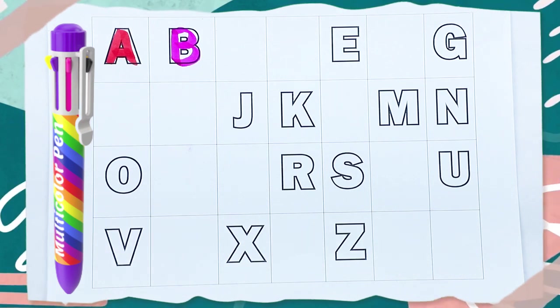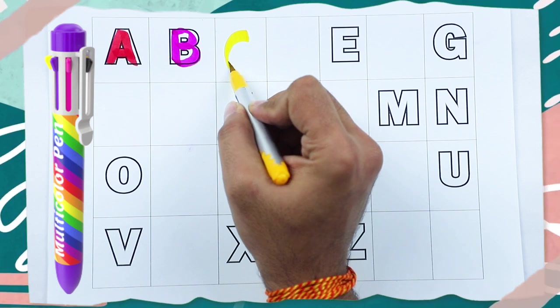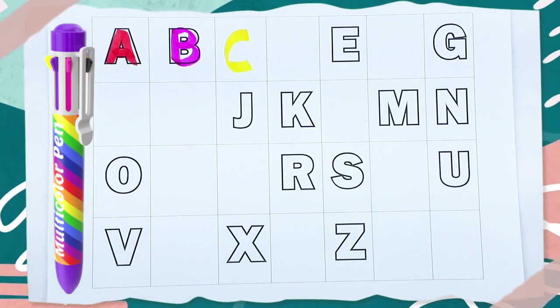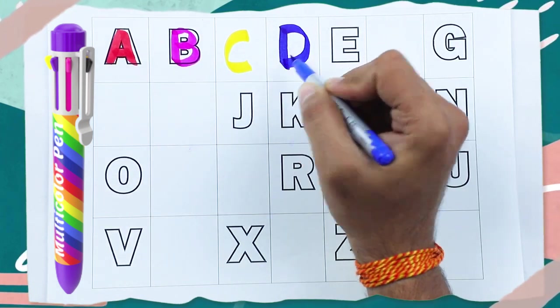What next? Tell me. Next is C. C for cat. What next? Tell me. Yes, right. It's D. D for dog.